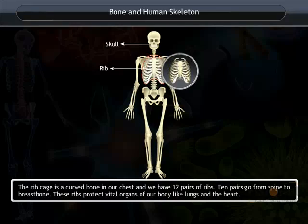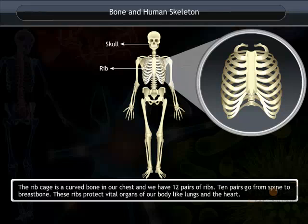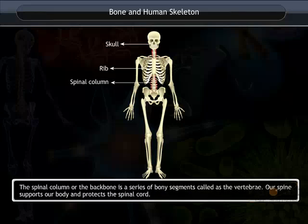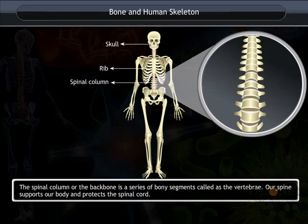The rib cage is a curved bone in our chest and we have 12 pairs of ribs. 10 pairs go from the spine to the breast bone. These ribs protect vital organs of our body like the lungs and the heart. The spinal column or the backbone is a series of bony segments called the vertebrae. Our spine supports our body and protects the spinal cord.